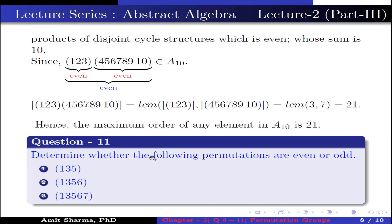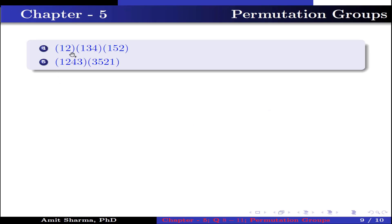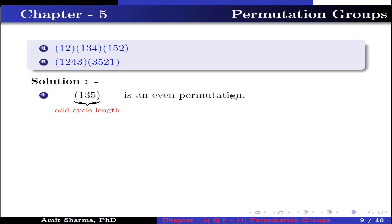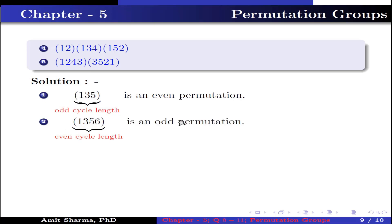Question number 11: Determine whether the following permutations are even or odd. Part 1: the permutation (1,3,5). Part 2: the permutation (1,3,5,6). Part 3: the permutation (1,3,5,6,7). Part 4: the product of permutations (1,2,13)(4,15)(2). Part 5: the product of permutations (1,2,4,3)(3,5,2,1). For part 1: since (1,3,5) is odd cycle length, it is an even permutation. For part 2: (1,3,5,6) is even cycle length, so it is an odd permutation.